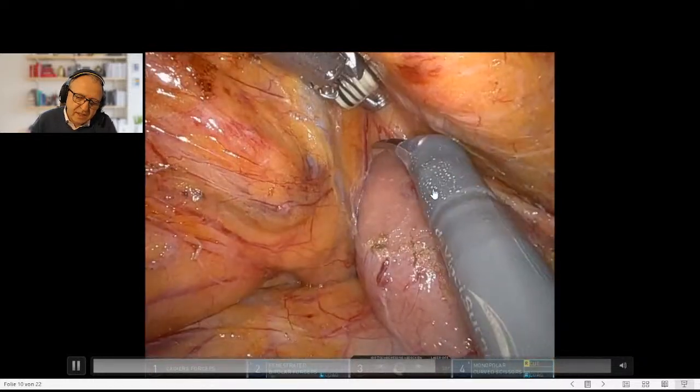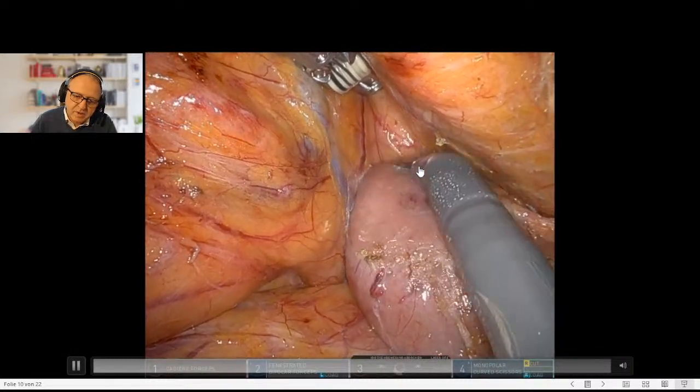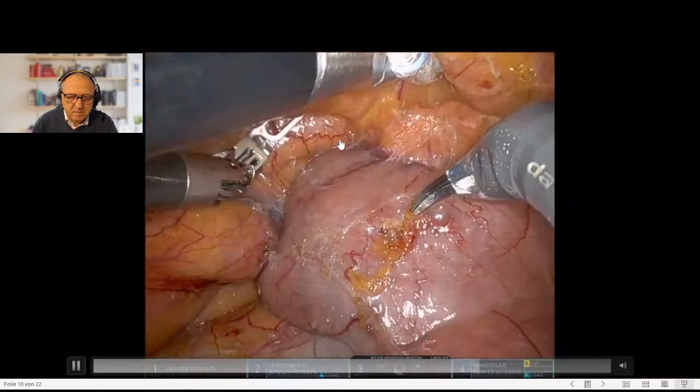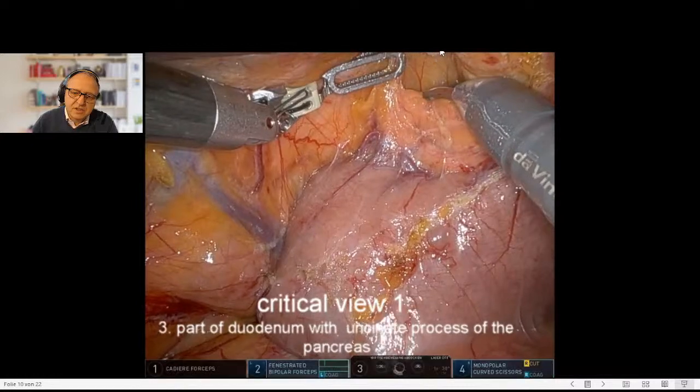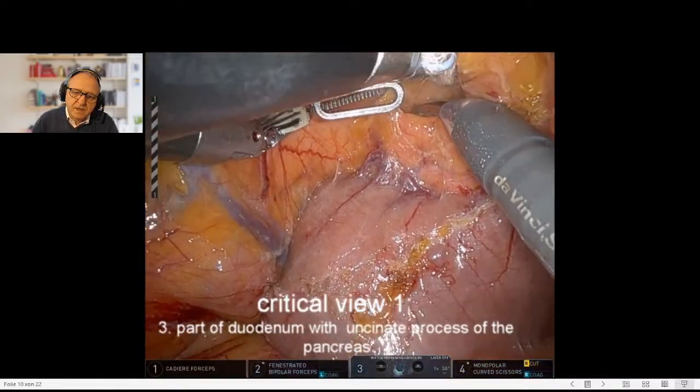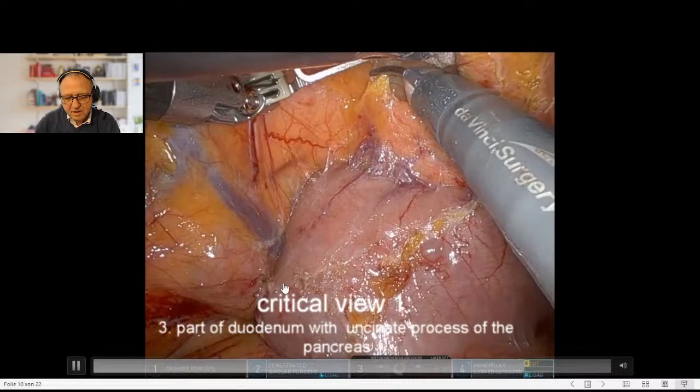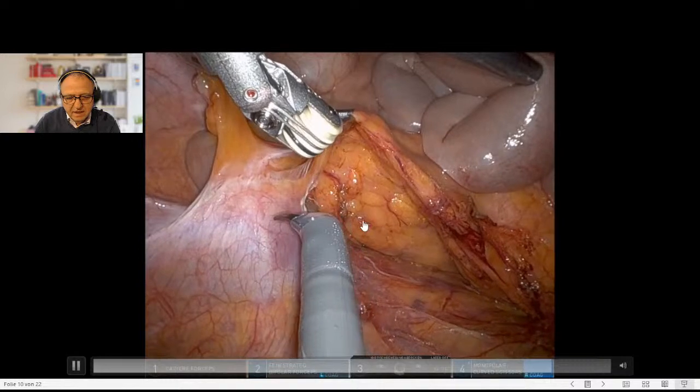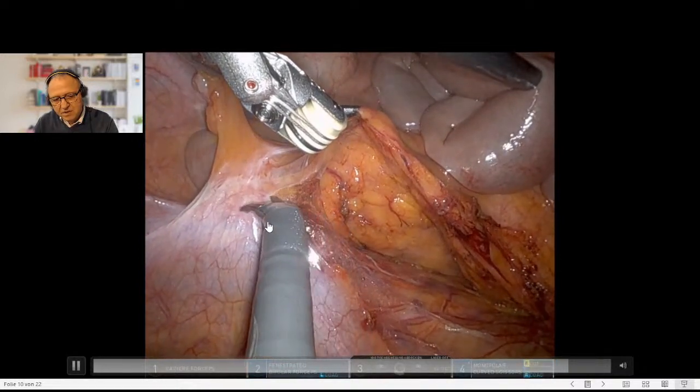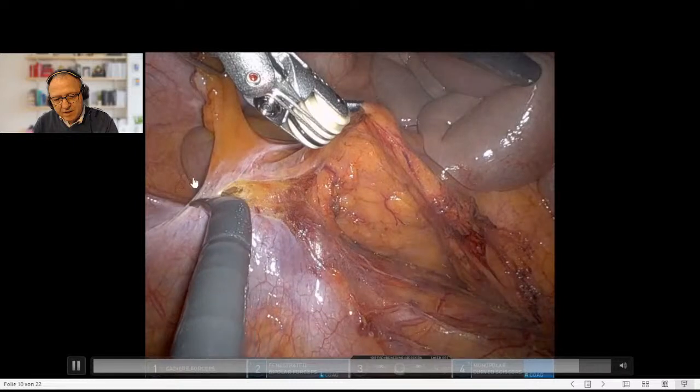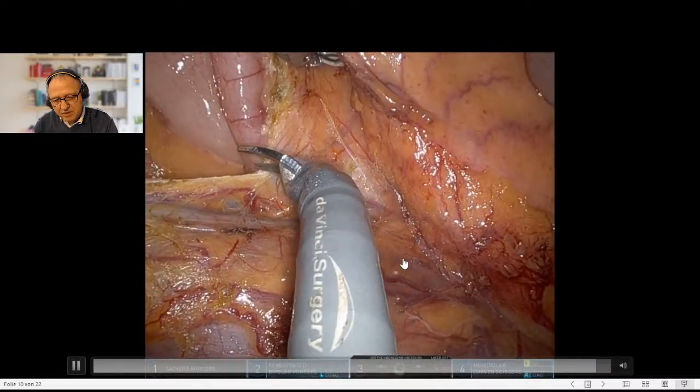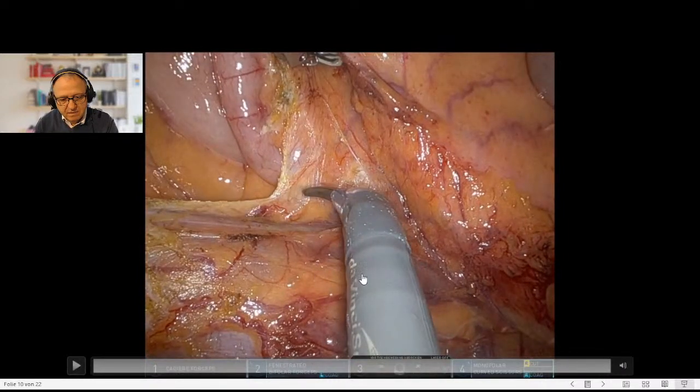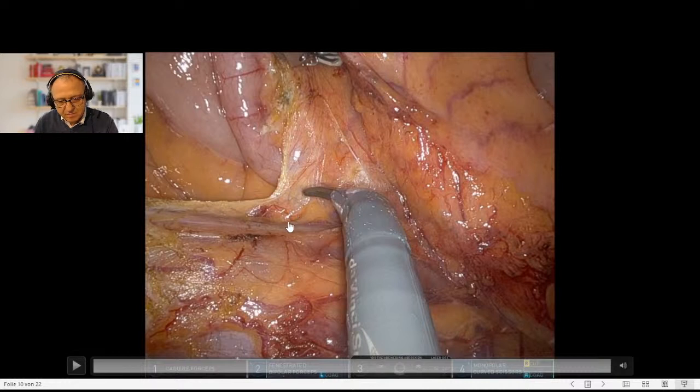Toldt's fascia is incised along the outer rim of the duodenum and Fredet's space is slowly opened. The duodenum can be pushed downwards. This is the superior right colic vein, pancreatic head is exposed, and then we reach critical view number one, third part of the duodenum. The SMB is here. Then we complete the dissection by incising the medial peritoneum down to the cecum. The ureter is down here and this is the gonadal vein.